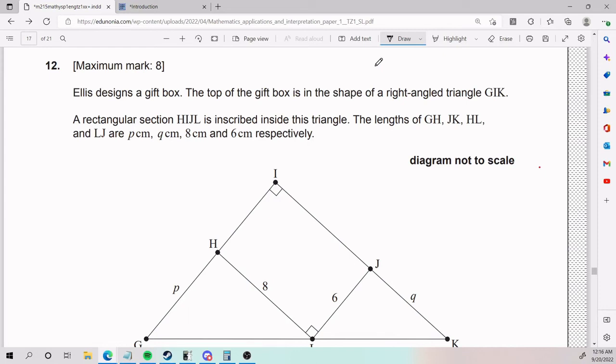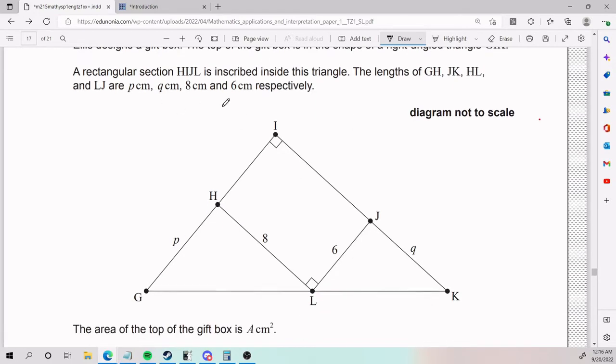Number 12 is absolutely nasty. We have that Ellis designs a gift box. The top of the gift box is in the shape of the right-angled triangle GIK. A rectangular section HIJL, which is this guy here, is inscribed inside the triangle. The lengths of GH, JK, HL, and LJ are P, Q, 8, and 6 respectively.